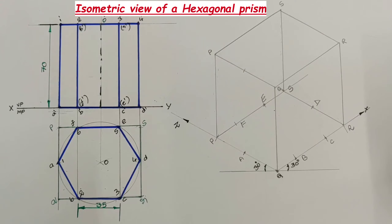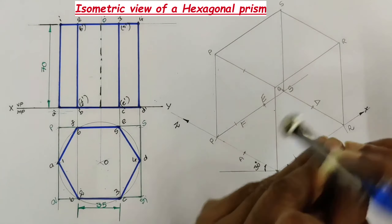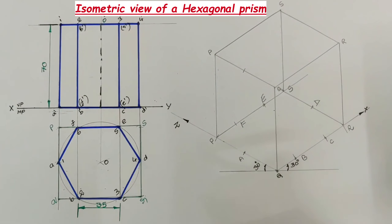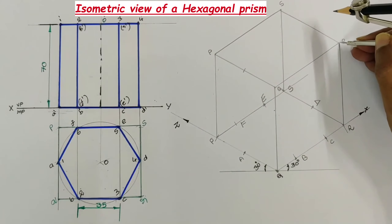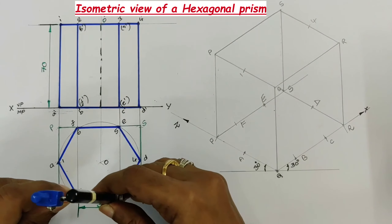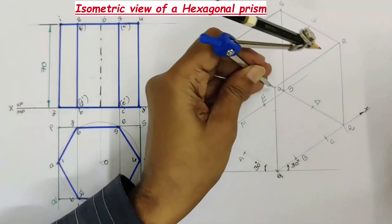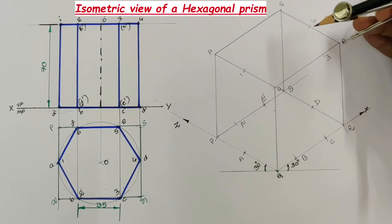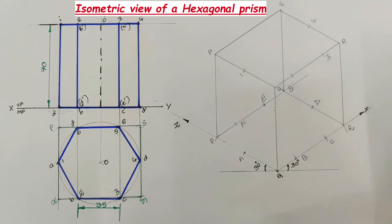Similarly, locate the top base points of the hexagonal prism on the top base of the isometric rectangular prism. With Q1 as radius and Q as center, draw an arc and name the point 1 — between Q and P. With the same radius and R as center, draw an arc and name point 4. With Q3 as radius and Q as center, name point 3 between Q and R; with R as center and same radius, get point 2. Similarly locate points 5 and 6.